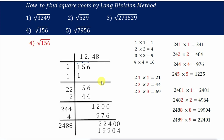In an exam, if they ask you to find the root of 156 up to two decimal places, you can stop here. If they ask for one decimal place, stop at 4. If they ask for three decimal places, continue one more time following the same method. If they don't specify, stopping at two decimal places is more than enough.